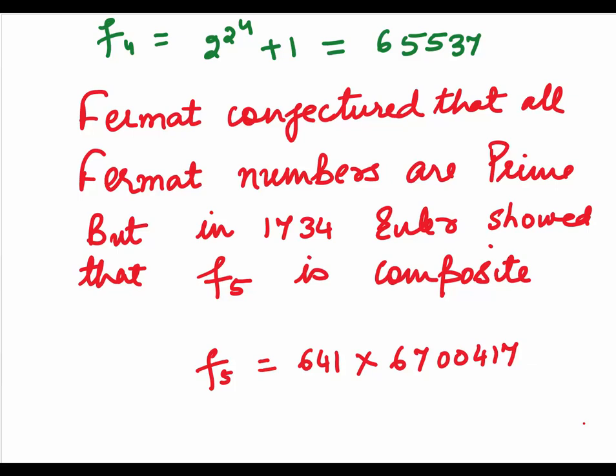Fermat conjectured that all Fermat's Numbers are prime. But in 1734, Euler showed that F5 is a composite number. It has two factors, 641 and 6700417.